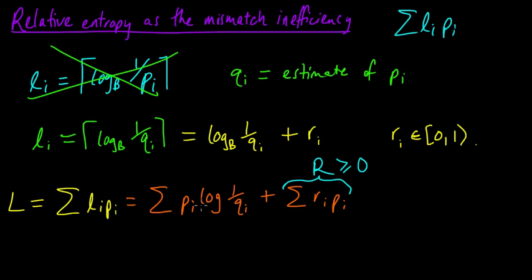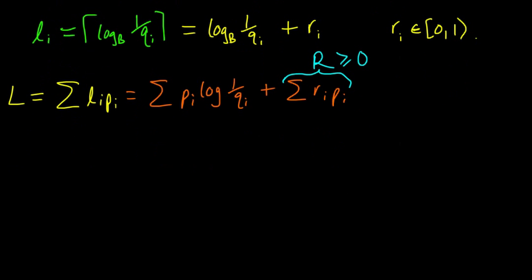Now let's play around with the main term: the sum of P_i times log of 1 over Q_i. We know from the minimization that this quantity is minimized when Q_i equals P_i, so this is always greater than or equal to the entropy. Maybe the thing to do is try to make this look like entropy.